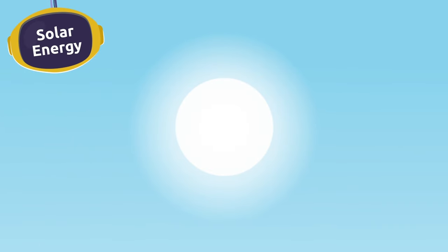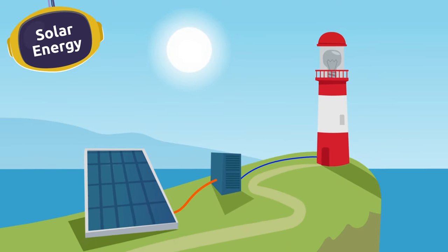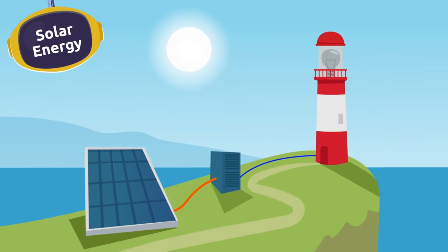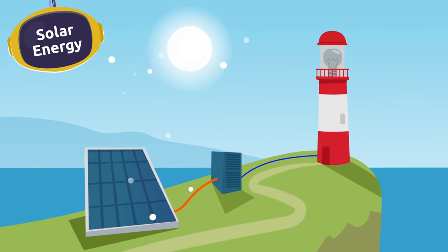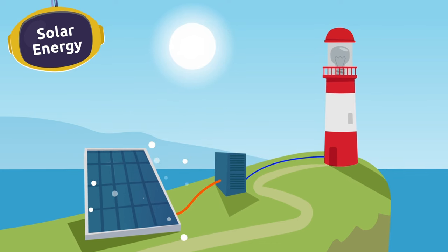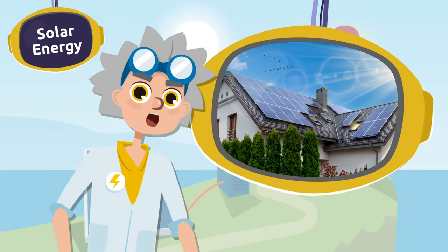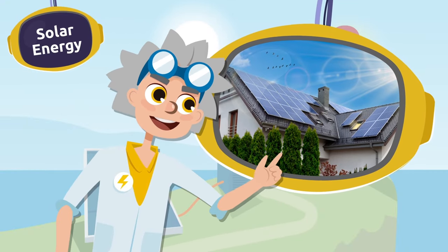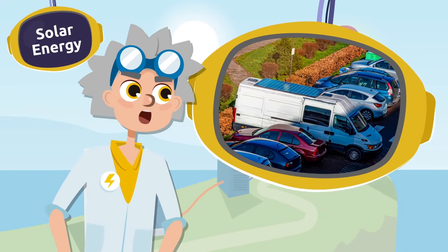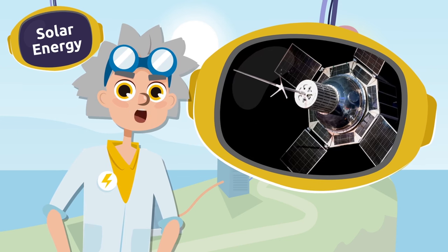Lastly, we will talk about the energy we can use from the Sun — this is called solar energy. When it's a sunny day, the solar panels capture the solar energy from the Sun and transform it into electricity. Solar panels can be found on buildings, cars, boats, and space satellites.